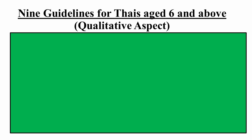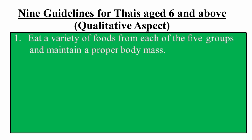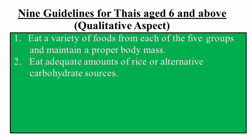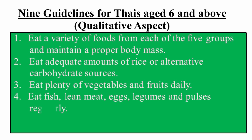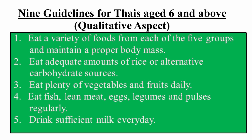1. Eat a variety of foods from each of the five groups and maintain a proper mass. 2. Eat adequate amounts of rice or alternative carbohydrate sources. 3. Eat plenty of vegetables and fruits daily. 4. Eat fish, lean meat, eggs, legumes, and pulses regularly. 5. Drink sufficient milk every day.